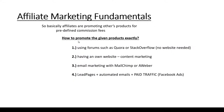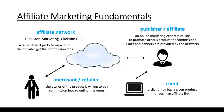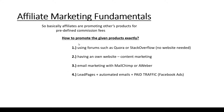A good question is how to promote a given product exactly. We are going to talk about how to promote others' products as an affiliate. We need to make sure clients buy the retailer's product through our affiliate link. There are four important techniques. First, we can use forums such as Quora or Stack Overflow — no website needed. Second, we can have our own website and do content marketing. Third, we can use email marketing with MailChimp or AWeber, which is by far the most successful affiliate marketing approach.